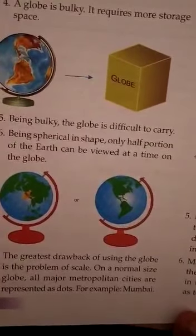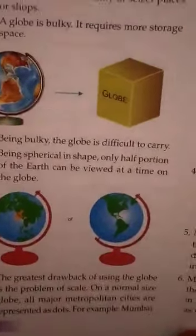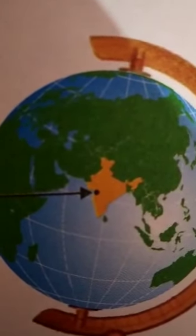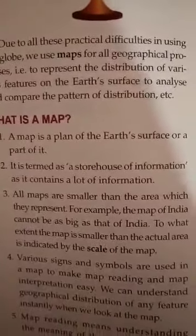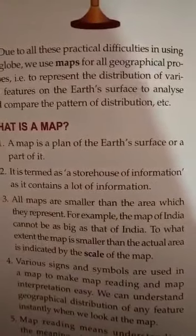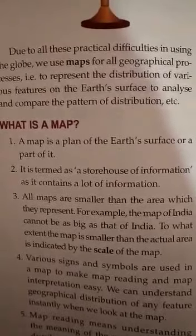The biggest drawback of using a globe is the problem of scale. On a normal-size globe, all major metropolitan cities are represented as dots. For example, Mumbai — you can see on this globe that Mumbai is shown as a very small dot. It means very limited space is available, so all the features of Mumbai can't be shown on a globe. Because of all these practical difficulties, we use maps.